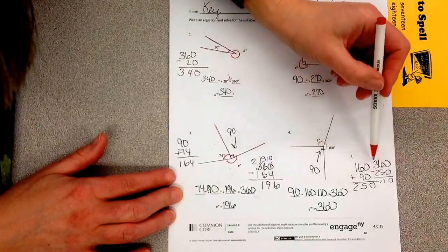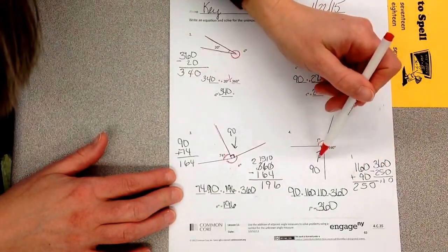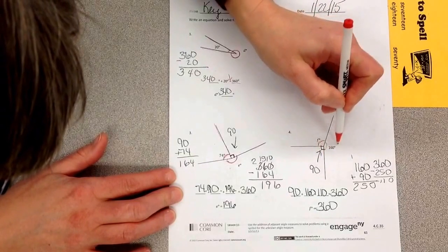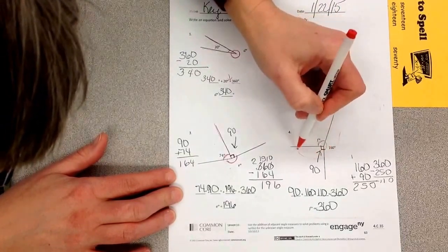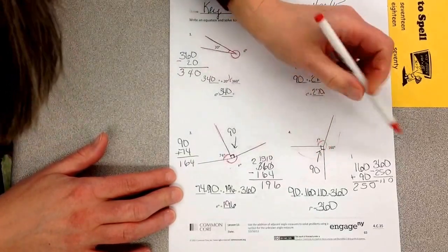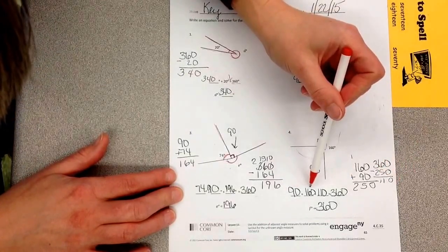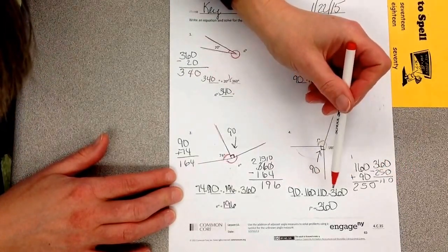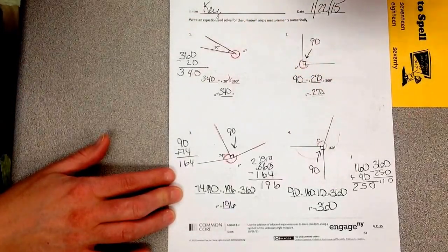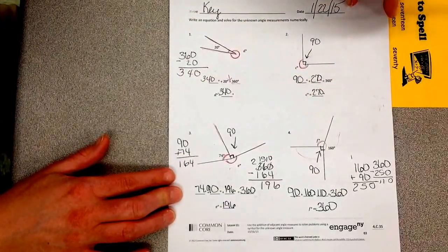So if I take 360 from 250. Remember, we added these. This is all 250 degrees. We have this defined. You subtract, you're going to get 110. So 90 plus 160 plus 110 equals 360. I'd like you to try the rest of the problems on your own.